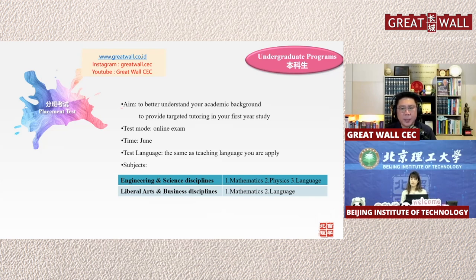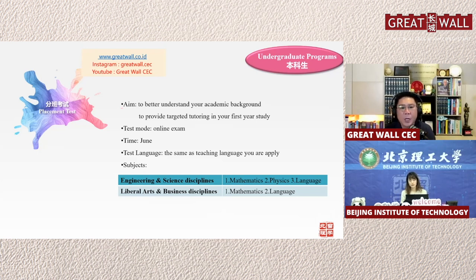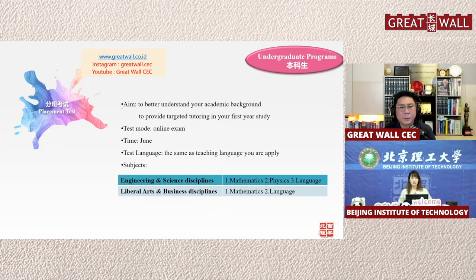Graders, once again — the placement test is not an entrance examination, so don't worry about whether you'll be accepted based on it. Admission results depend on your high school academic background, application materials such as your personal statement, and your interview. After these three components, BIT makes the admission decision and notifies you. The placement test comes only after the admission results.